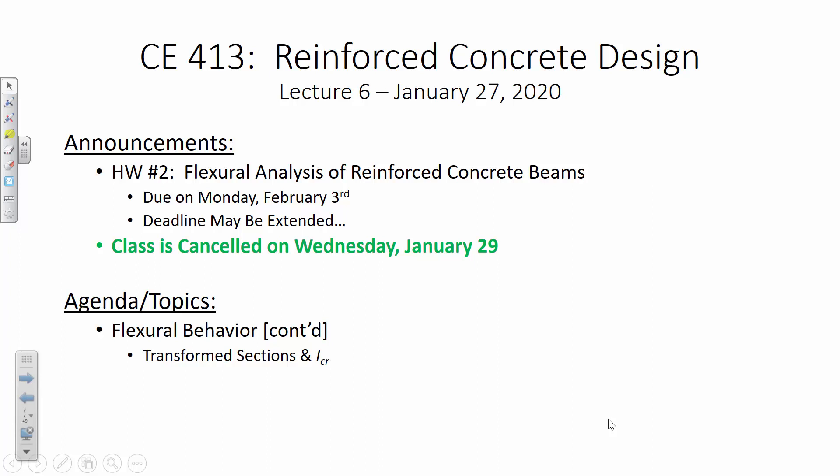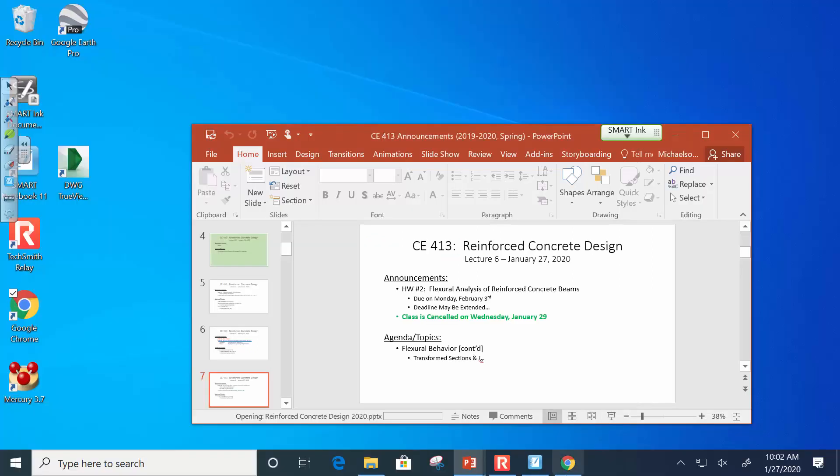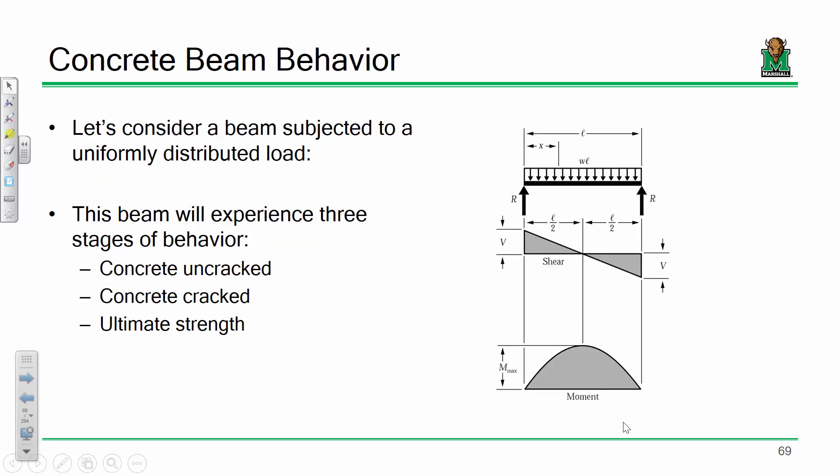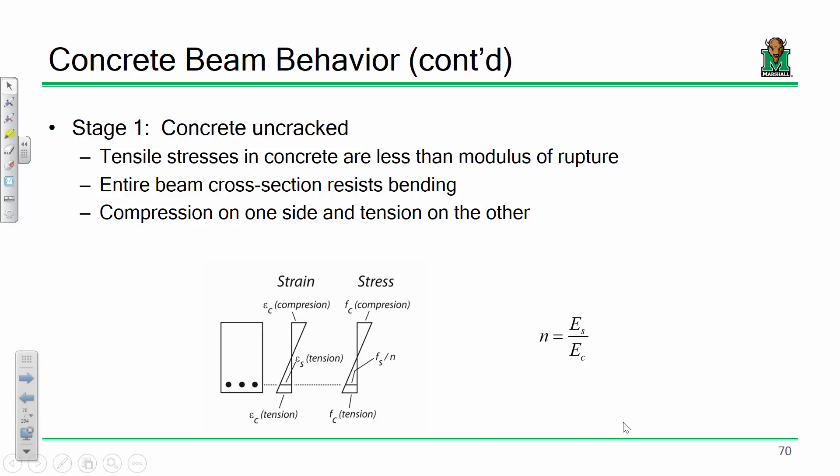Let's get right into concrete. For the past little bit we've been looking at concrete beam behavior — just flexural behavior. We take a concrete beam, bend it, and ask how it responds as the load gets bigger and bigger. The first stage of concrete behavior is when it is uncracked, meaning the tensile stresses are low enough such that the tensile stress is less than the modulus of rupture, MR.